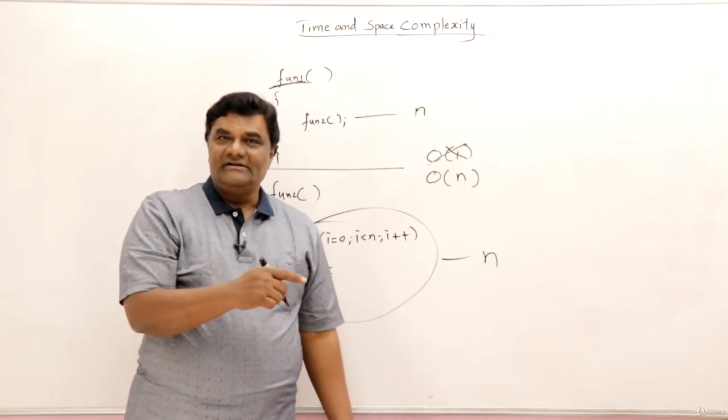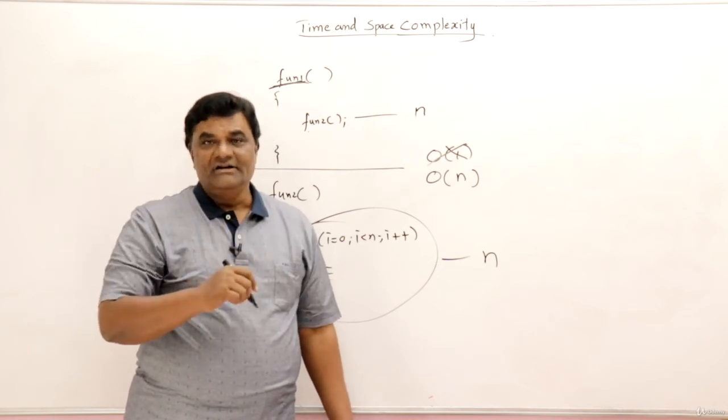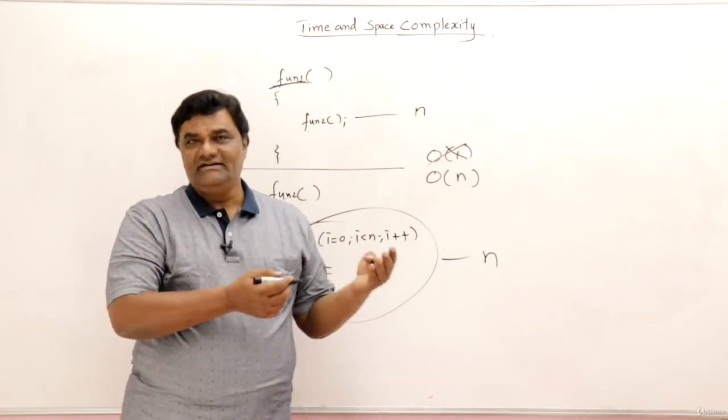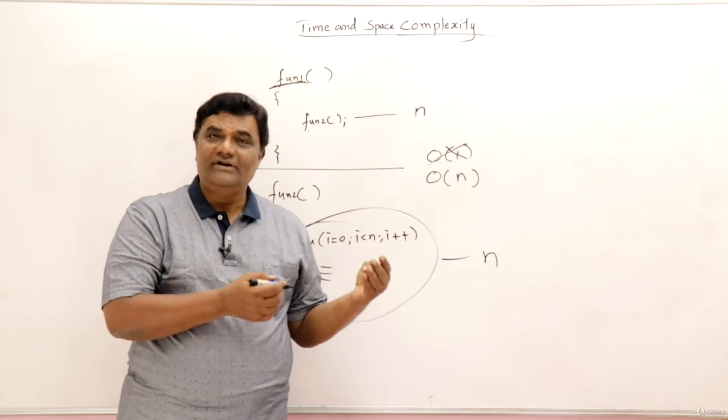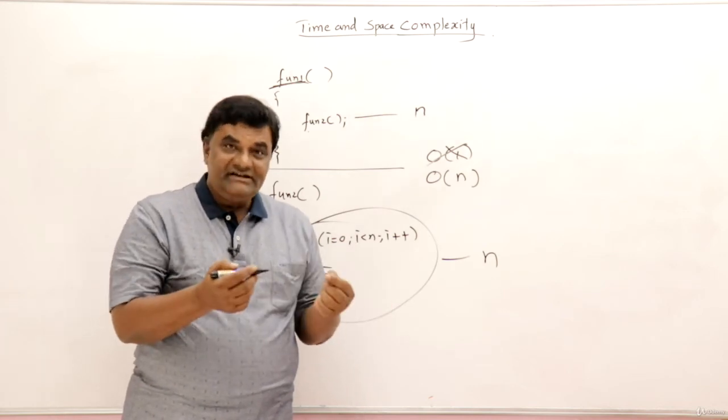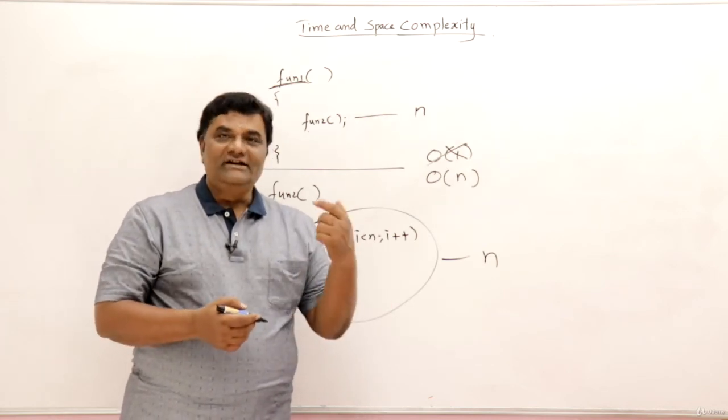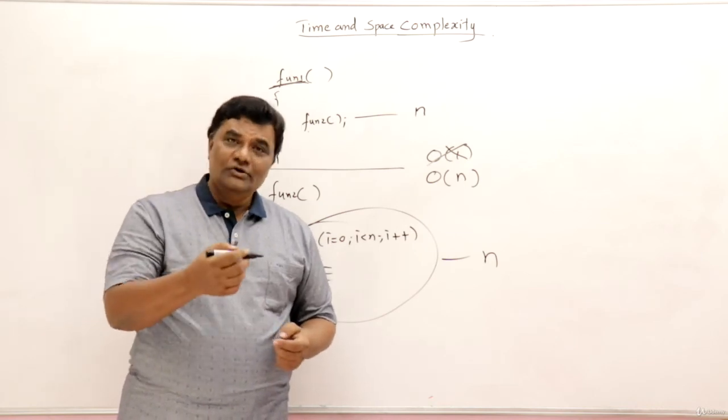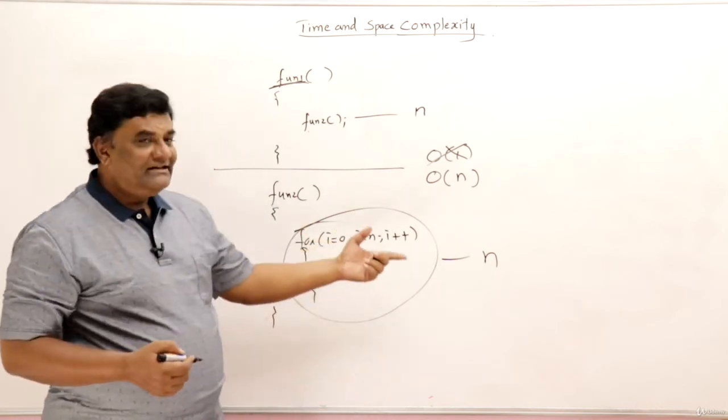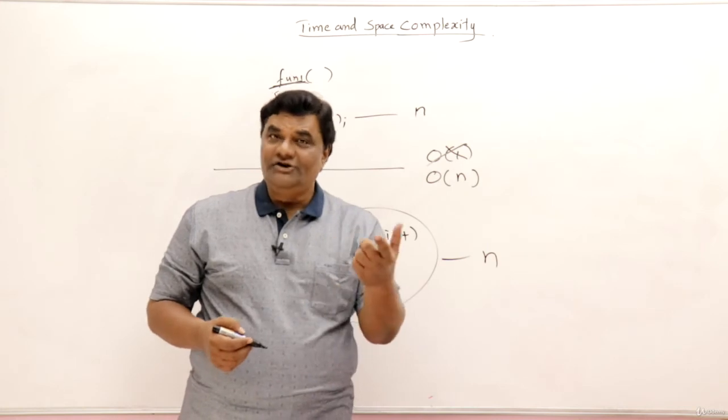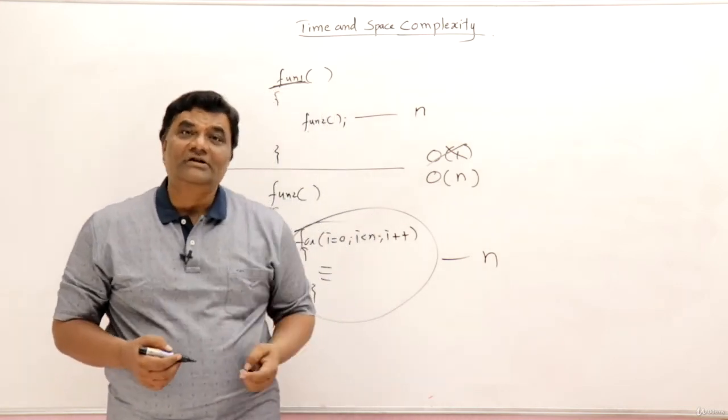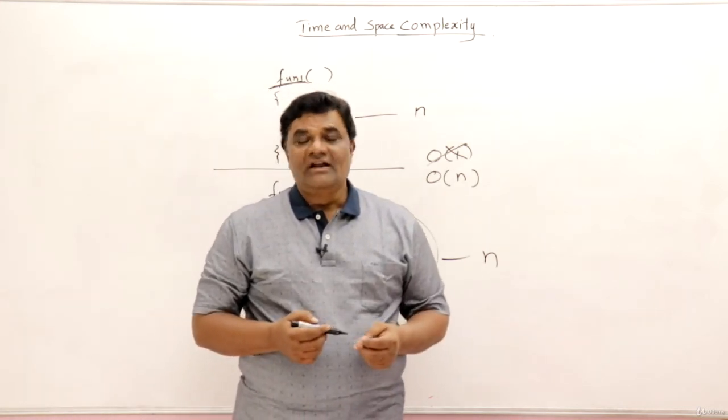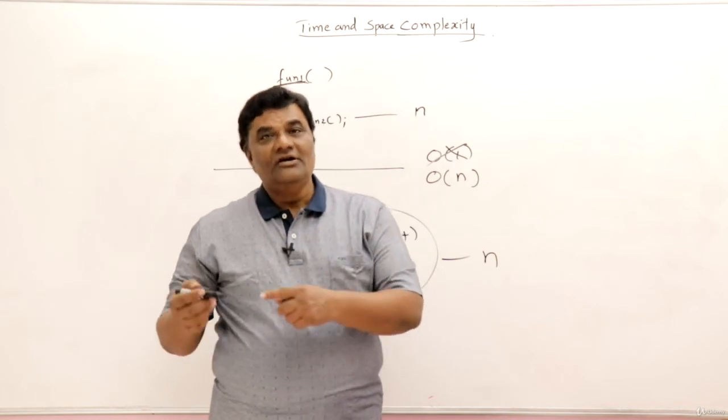So that's all. Now look into the details of these statements and try to find out the time. If there are simple statements, you can directly write down the time as one. If it is complex, then see what it is doing. Then based on that, you can write down the time. So mostly loops are making the time as n or n square or maybe n cube. So mostly it depends on loops that you are using.